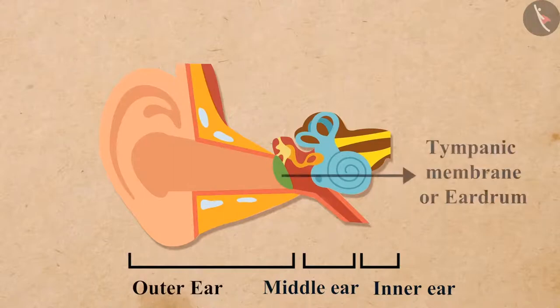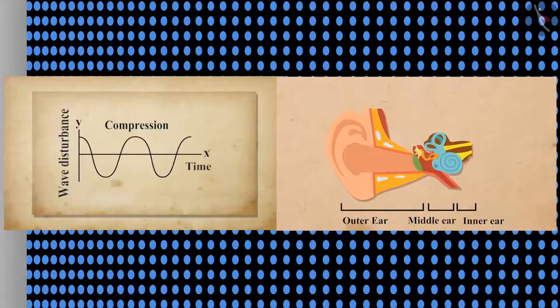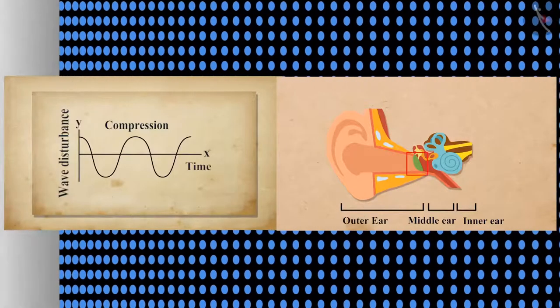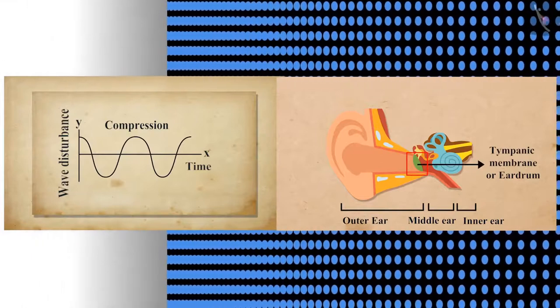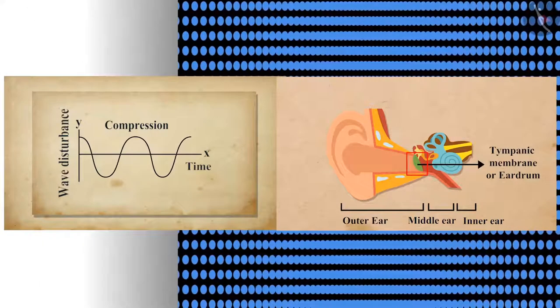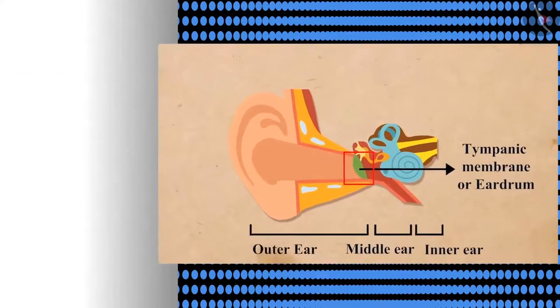Then the sound reaches the eardrum or the tympanic membrane. Whenever a compression of the medium reaches the eardrum, it increases the pressure outside the membrane and forces the membrane inward.